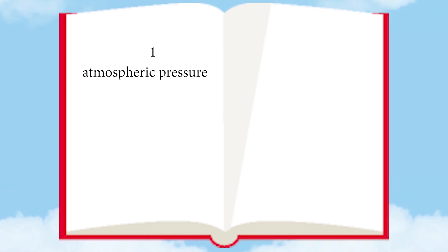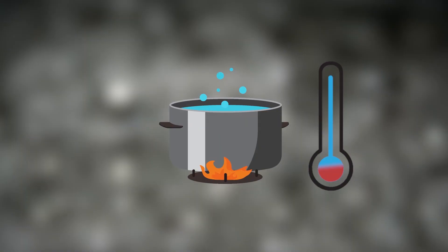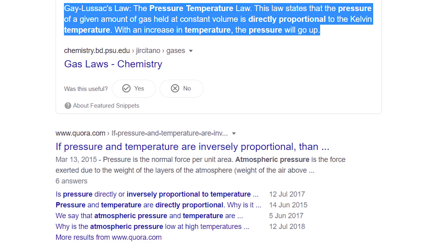It is properly defined as: the boiling point of water is 100 degree Celsius at 1 atmospheric pressure. It is not necessary that water boils only at 100 degree Celsius. You can boil it at whatever temperature you want, but you also have to change the atmospheric pressure. For example, water can boil at 80 degree Celsius at a different atmospheric pressure. Atmospheric pressure is directly proportional to the boiling temperature.